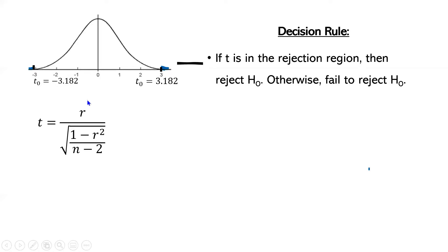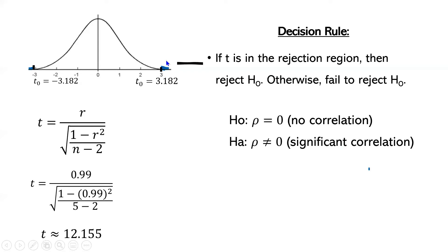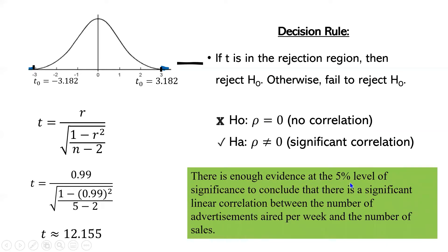Computing the t-statistic with r = 0.99: t = 0.99 divided by the square root of (1 − 0.99²) / (5 − 2), which gives t = 12.155. Since 12.155 is greater than 3.182, it falls in the rejection region. Therefore, we reject the null hypothesis and accept the alternative hypothesis. There is enough evidence at the 5% level of significance to conclude that there is a significant linear correlation between the number of advertisements aired per week and the number of sales.